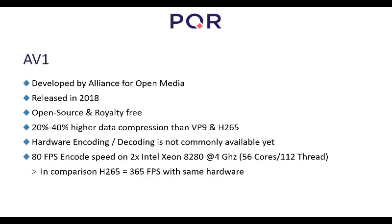AV1 has 20 to 40 percent higher data compression than VP9 and H.265, and around 60 percent better than H.264. However, hardware encoding and decoding support is not yet commonly available. Looking at encoding speed on Intel CPUs, there's a massive difference: just 80 frames per second for a full HD stream on a 62-core Intel Xeon, compared to 365 frames per second for H.265 on the same setup.